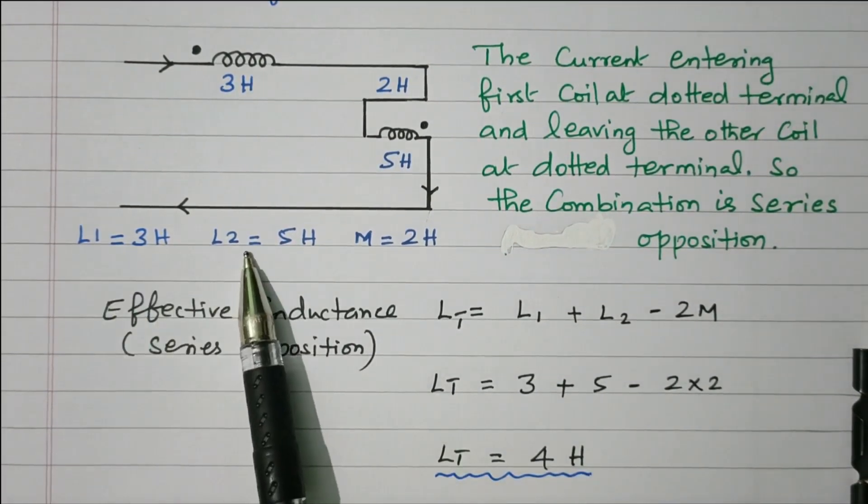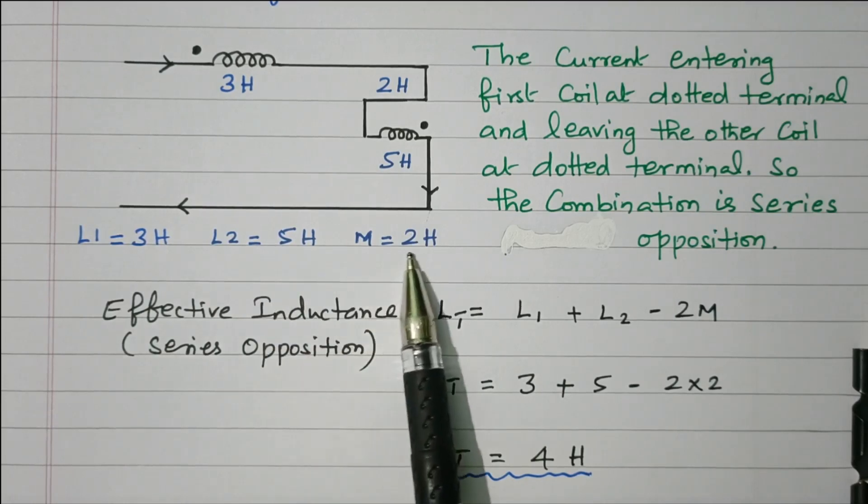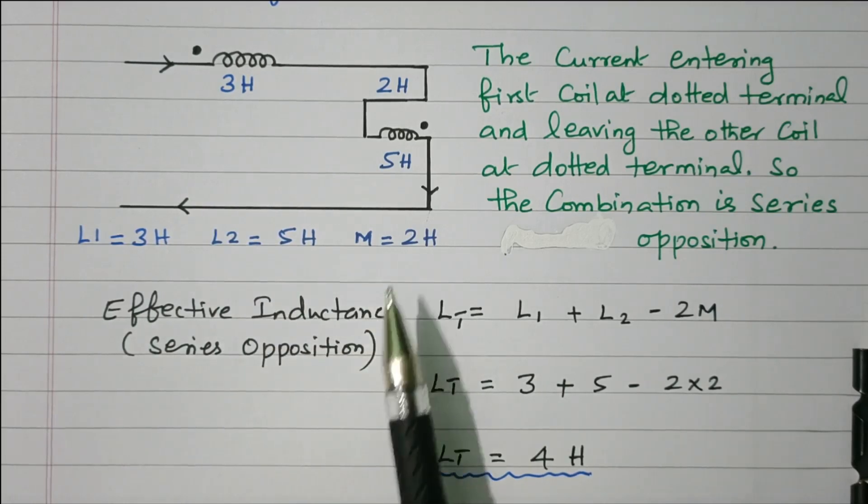So we will see what is the total inductance. L1 is 3 Henry, L2 is 5 Henry, and mutual inductance between these coils is 2 Henry.